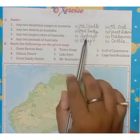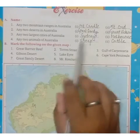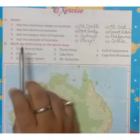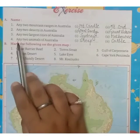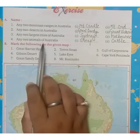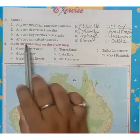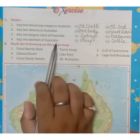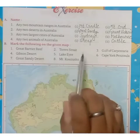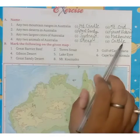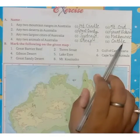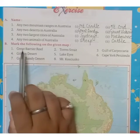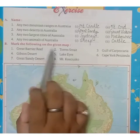For the two larger cities, you will write Sydney and Melbourne. Next is any two animals of Australia — you will write sheep and cattle.